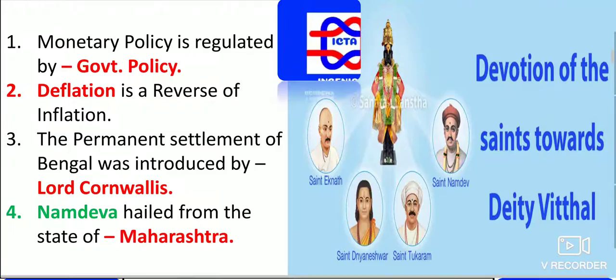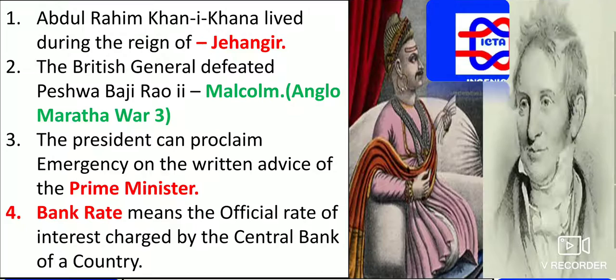Abdul Rahim Khani Khana lived during the reign of Jahangir. Remember the Mughal chronological order: Babur, followed by Humayun, followed by Akbar — then you should remember Jahangir, Shah Jahan, and Aurangzeb in order.